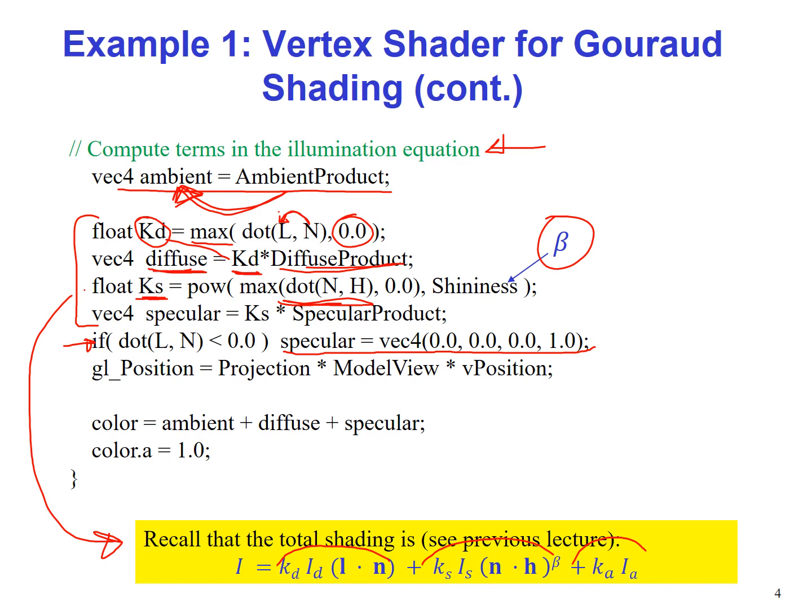And finally, we put the location of the vertices, which is vPosition. We multiply it with the ModelView matrix and then we multiply it with the Projection matrix and put these values in the built-in variable of the vertex shader. This just passes down the pipeline. The final color that is calculated is the ambient plus the diffuse plus the specular. This addition calculation is performed here, and we give it an alpha value of 1 after performing these calculations, and this is passed down the pipeline.